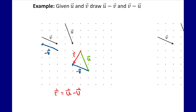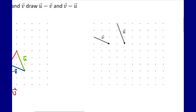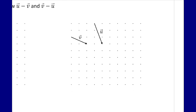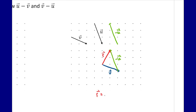Now I'll do the same thing for v minus u. I draw vector v first, then I need the opposite of vector u — same magnitude but in the opposite direction. I add them tip to tail, and draw the resultant. This resultant equals vector v minus vector u.